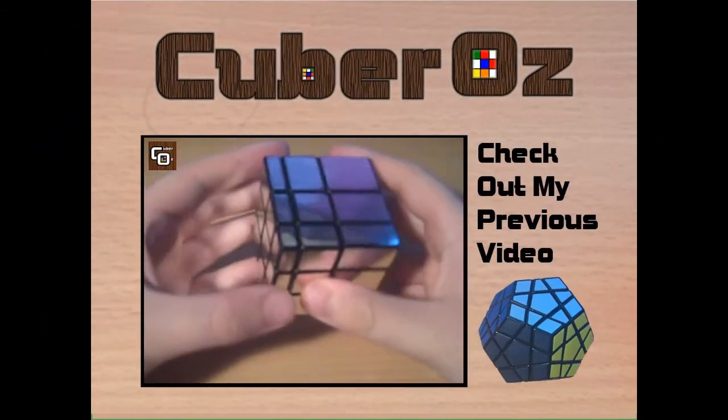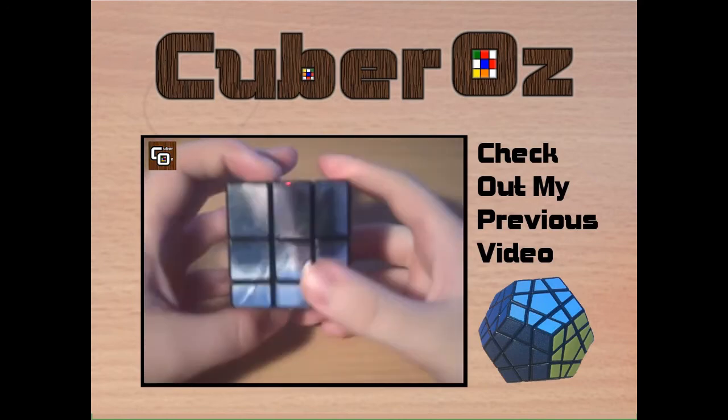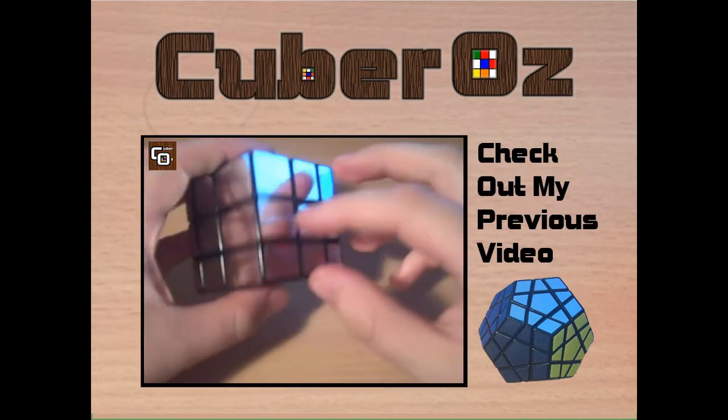Here's a 3x3 shape mod. Most of you have probably seen it. It's quite old by now. You can usually get these in gold or silver.